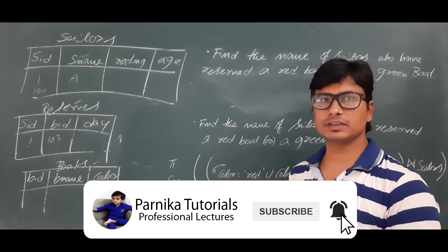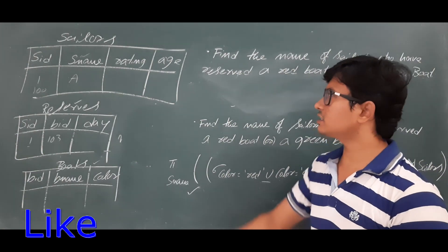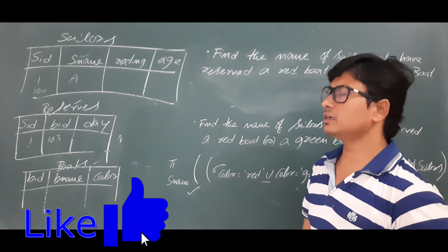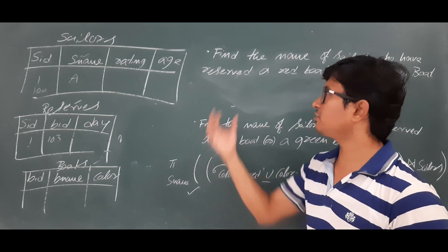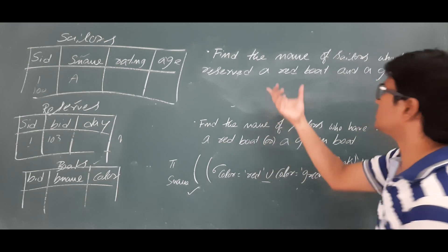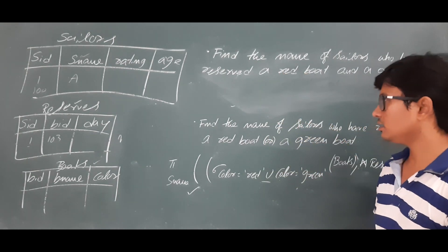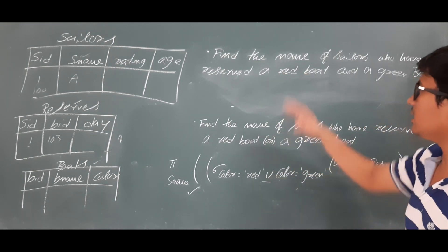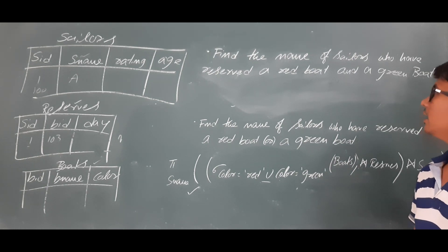Good morning friends. In the last video we discussed a few relational algebra expressions for given queries. In this video I will discuss another query for better understanding. The question is: find the name of sailors who have reserved a red boat and a green boat.